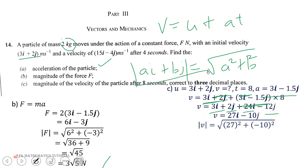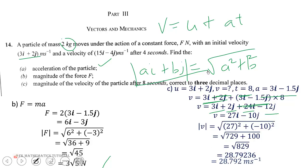The magnitude is √(27² + (-10)²) = √(729 + 100) = √829. To 3 decimal places, we get 28.792 meters per second.